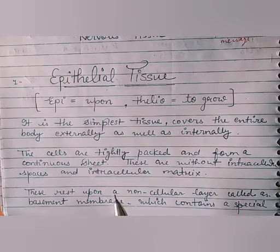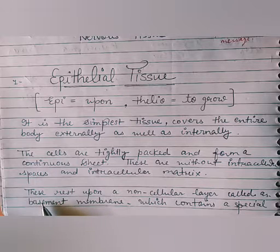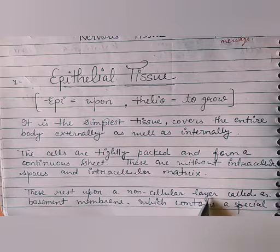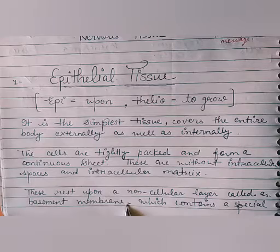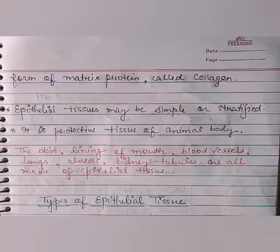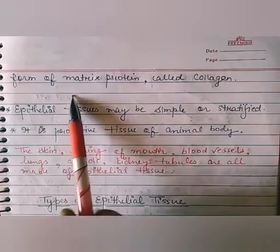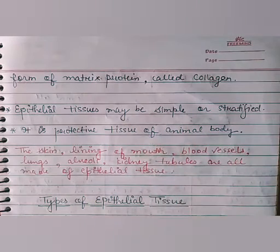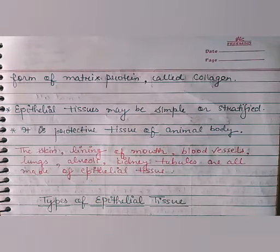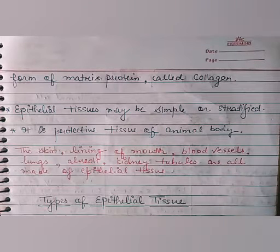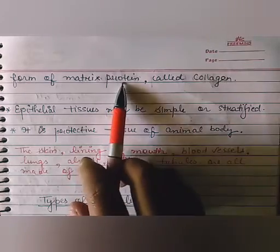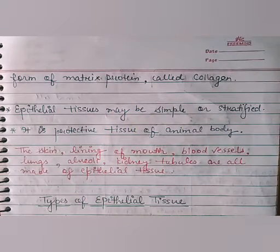These cells are fitted closely. The tissue rests upon a non-cellular layer called the basement membrane, which contains a special form of matrix protein called collagen. So epithelial tissues are found on this non-cellular layer made up of the protein collagen.